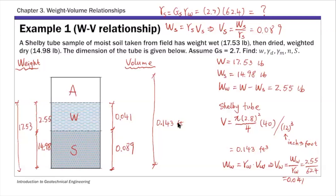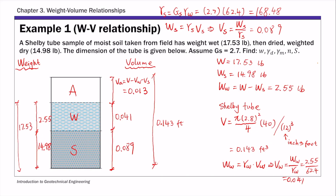Once you have the volume of solids, you know the volume of water, and you know the total volume - so the volume of air is just the difference, which is 0.013 cubic feet. Note that γs is 168.48 pcf. Let's move to a new slide.